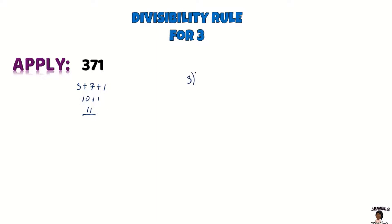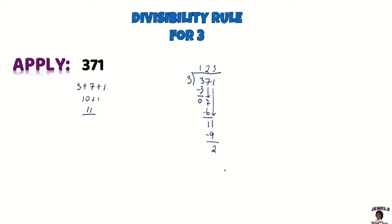So let's try our division to verify. Dividing three into 371: three goes into three once; one times three is three; three minus three is zero. Bring down the seven; three goes into seven two times; two times three is six; seven minus six is one. Bring down the one; dividing three into eleven goes three times; three times three is nine; eleven minus nine gives a remainder of two. So the rule is confirmed: the digits summed to eleven, which is not a multiple of three, and dividing gave us a remainder.